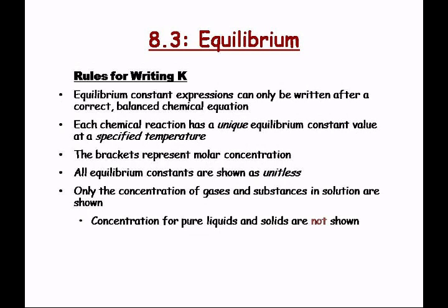There are some rules you need to follow. Equilibrium constant expressions can only be written after a correct balanced chemical equation — if you don't balance it correctly, you won't be able to get the correct superscripts. Each chemical reaction has a unique equilibrium constant value at a specified temperature. If I change from 0 degrees Celsius to 20 degrees Celsius, it's going to be a different equilibrium constant. The brackets represent molar concentration, so you need to get all your concentrations in molar values — convert to moles per liter.